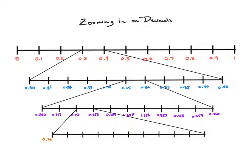My first number would be three hundred fifty two thousandths and my last number is three hundred fifty three thousandths. I can make equivalent decimals by placing a zero in the ten thousandths place. Because there are ten sections, we're counting up by one ten thousandth each time. So this would be three thousand five hundred twenty one, three thousand five hundred twenty two, and so on — up through three thousand five hundred twenty six, three thousand five hundred twenty seven, and my last one, three thousand five hundred twenty nine ten thousandths.